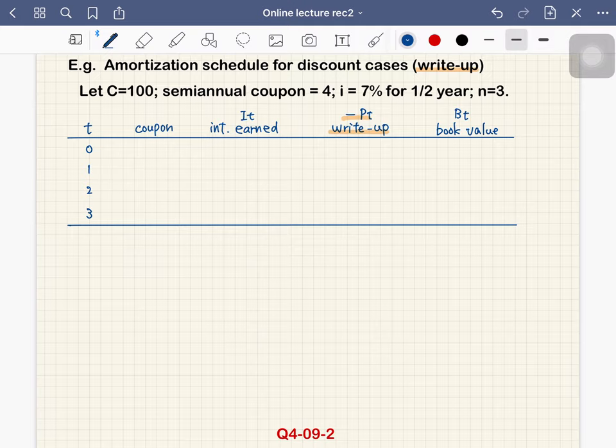So that means 1.5 year bond. OK, so the time unit is a half year. Then what's the coupon amount? So coupon amount is 4 each period. And how about B0, the initial value?